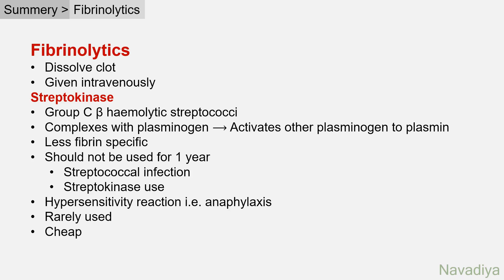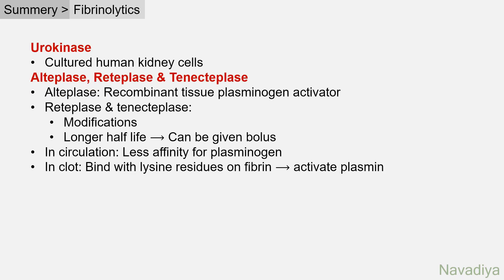Time for summary. Fibrinolytics are drugs that dissolve clots and are all given by intravenous route. Streptokinase is obtained from group C beta-hemolytic streptococci. It complexes with plasminogen, and that complex activates other plasminogen molecules. It is less fibrin specific compared to other drugs. It should not be used for 1 year after streptococcal infection or streptokinase use due to antibodies, and it causes hypersensitivity reactions like anaphylaxis. It is rarely used now but is very cheap. Urokinase is obtained from cultured human kidney cells. Alteplase is recombinant tissue plasminogen activator. Reteplase and tenecteplase are modified versions with longer half-life and can be given as a bolus.